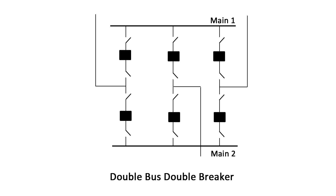Substations with a double bus, double breaker arrangement require twice the equipment as the single bus scheme, but are highly reliable. This scheme is typically found in high-voltage transmission substations or generating stations.